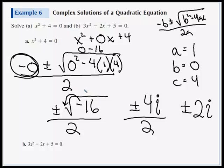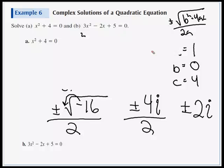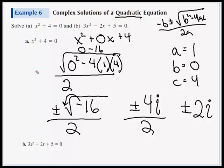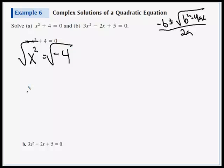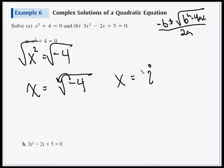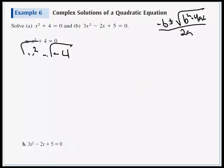An easier approach: since there's no x term, we can extract square roots. Subtract 4 from each side to get x² = −4, then square root both sides: x = plus or minus the square root of negative 4. Bring out the negative as i, and the square root of 4 is 2, giving x equals plus or minus 2i — the same answer, but quicker. Still, practicing with the quadratic formula is worthwhile.